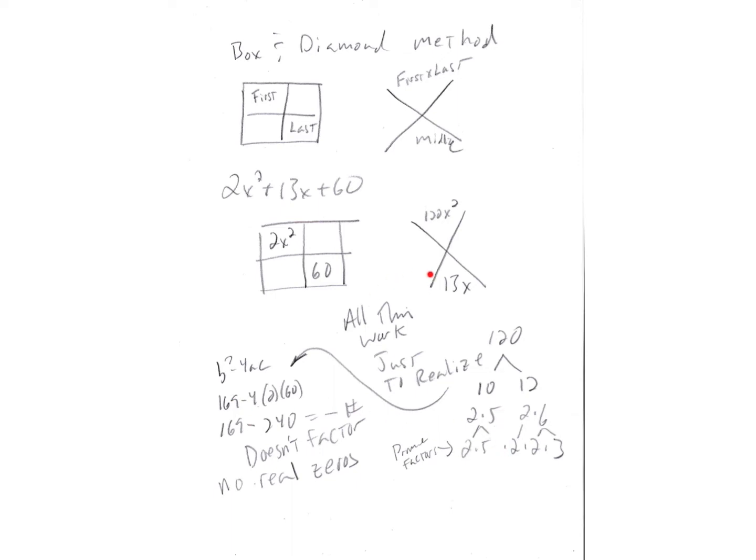And so I said 13, let's see, what is it, 13 squared is 169, and then 4 times 2 times 60 works out to be negative 240. Well 169 minus 240 is a negative number, so this doesn't factor.